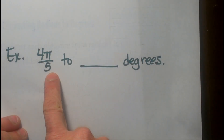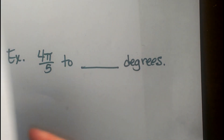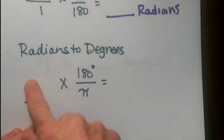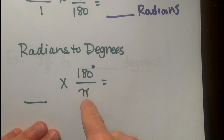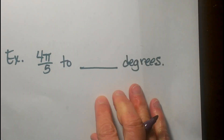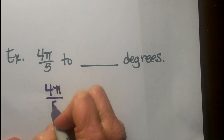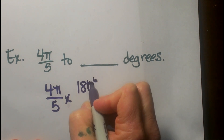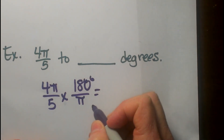So hopefully you have seen radians back to degrees. Let's pull back our little formula. Our little formula looks like this: we put our radians here and we multiply it this time by 180 over pi because I am trying to get rid of my pi. So I have 4 pi over 5 and I am going to multiply it by 180 over pi so my pi's will cancel once I cancel them out.